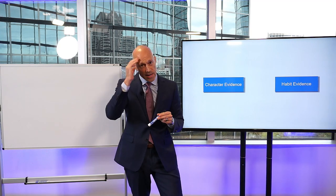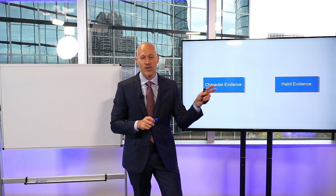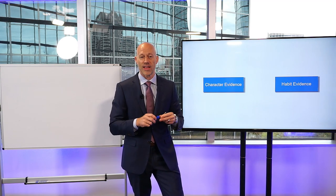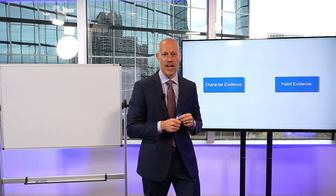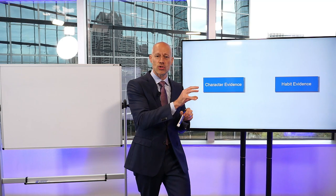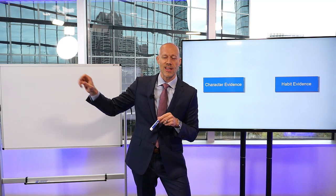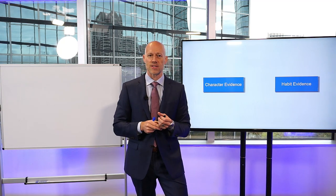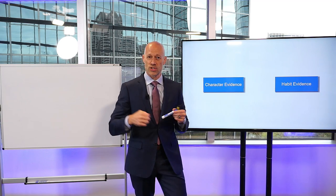The distinction is often very judge-dependent — what might be habit evidence to one judge might be character to another. For example, if someone has the character trait of speeding, they have a tendency or propensity to speed on the highway — that's character evidence. It doesn't happen all the time, but they tend to do it, and it can't be used to prove that on a certain date they were speeding. Wearing a seat belt, on the other hand, is semi-automatic and almost unconscious — it always happens — so evidence that someone always wore a seat belt could be used to prove they were wearing it on the date in question.